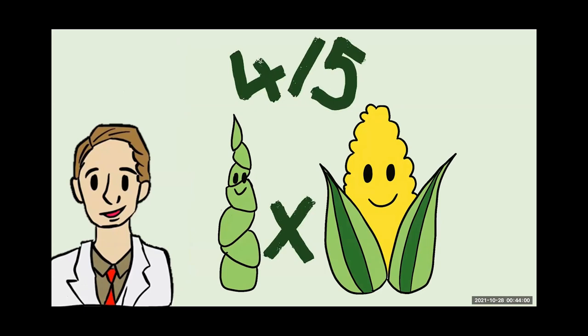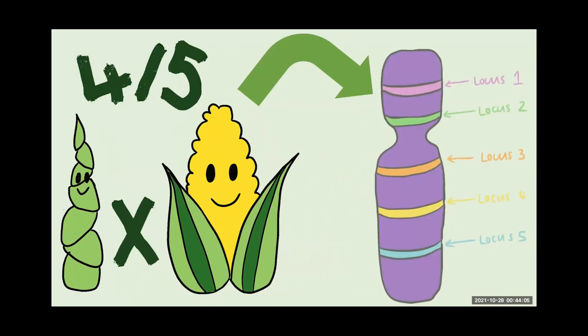In 1972, Beadle estimated that four to five major loci were involved in maize domestication based on experimental populations. This was substantiated in 1993, where five major quantitative trait loci were mapped for these trait differences.